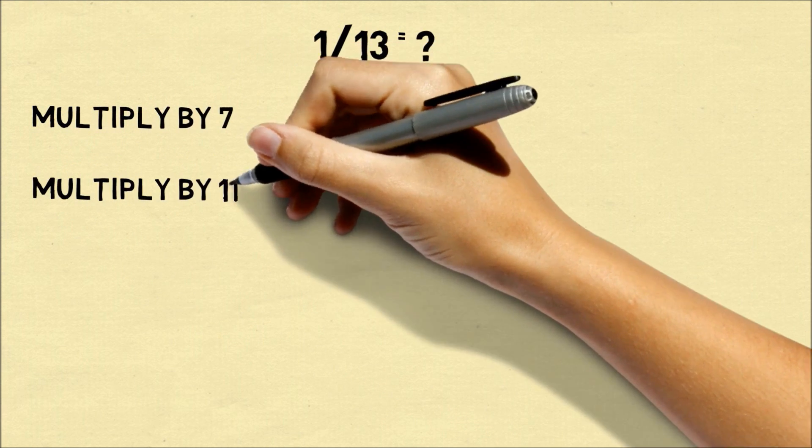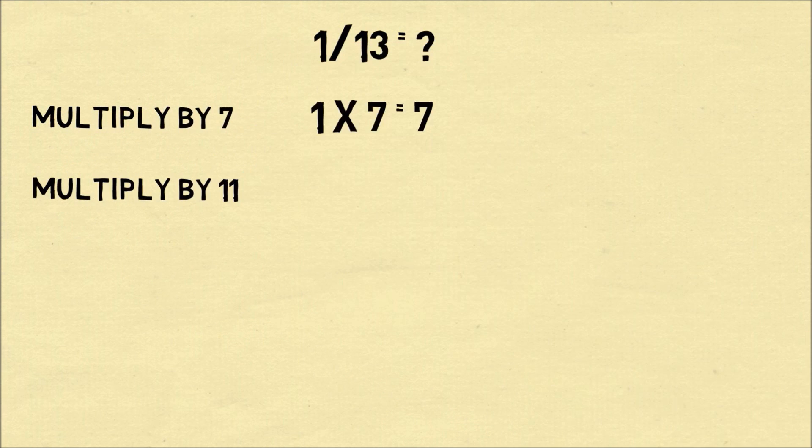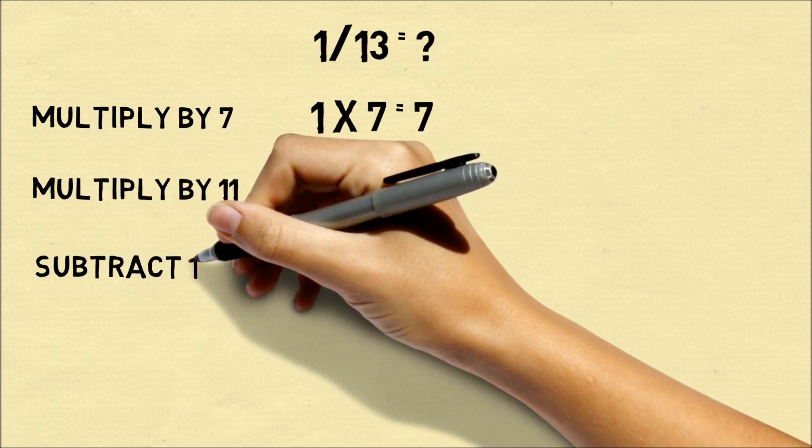Then we take the result and multiply it by 11. This is also an easy part. 7 times 11 is 77. The only thing we have to remember here is we want this as a three digit answer, so we should write it as 077.